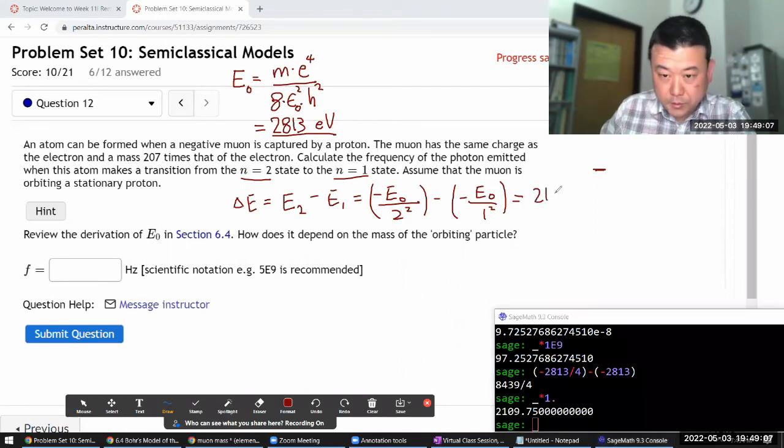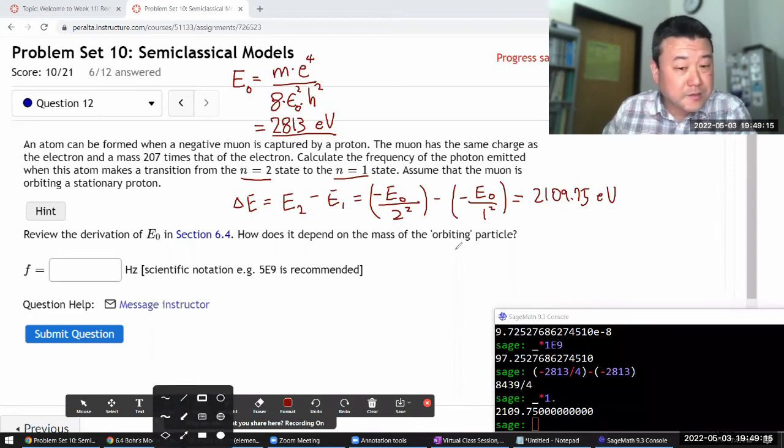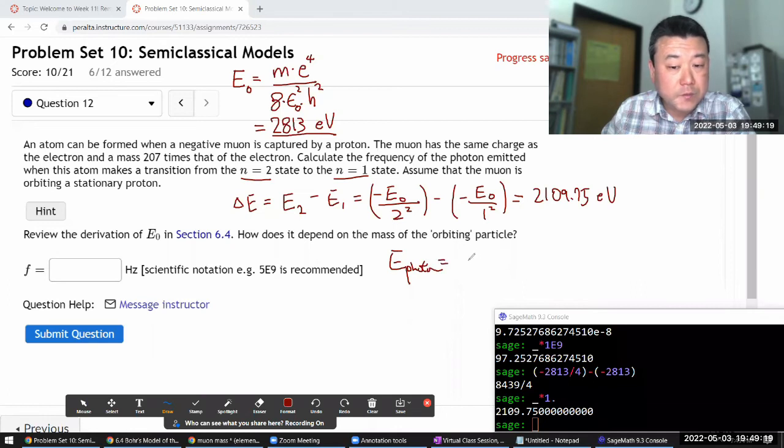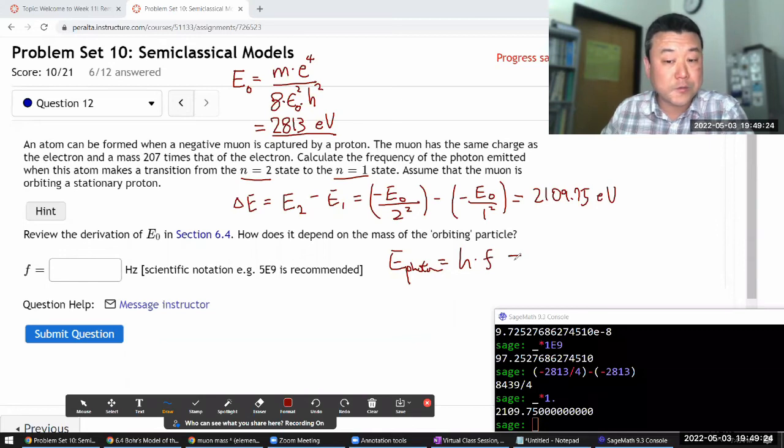Now the question doesn't actually ask me for the energy. It asks me for the frequency. For that portion it hasn't changed. The photon energy is related to its frequency through that relationship that Einstein guessed: Planck's constant times frequency.